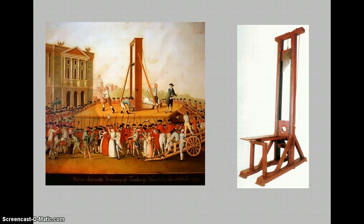The French Revolution called for action against enemies of the state. Creating a common enemy made a channel for the people's rage. Danton said, "Let us embody terror to prevent the people from doing so." Under the reign of terror, words as well as actions led to denunciation. Neighbors denounced neighbors, and friends denounced friends.